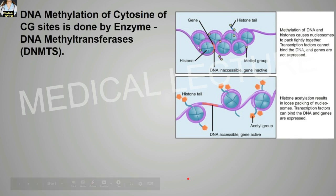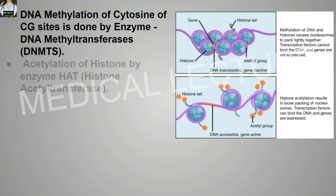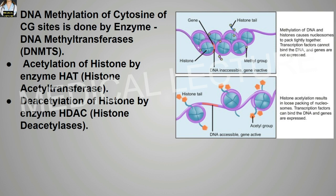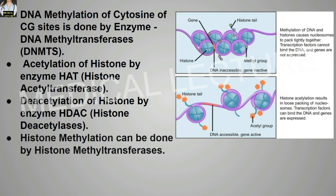DNA methylation of cytosine at CG sites is done by the enzyme DNA methyltransferases. Acetylation of histone is done by the enzyme histone acetyltransferase. Deacetylation of histone is done by histone deacetylase. Histone methylation can be done by histone methyltransferases.